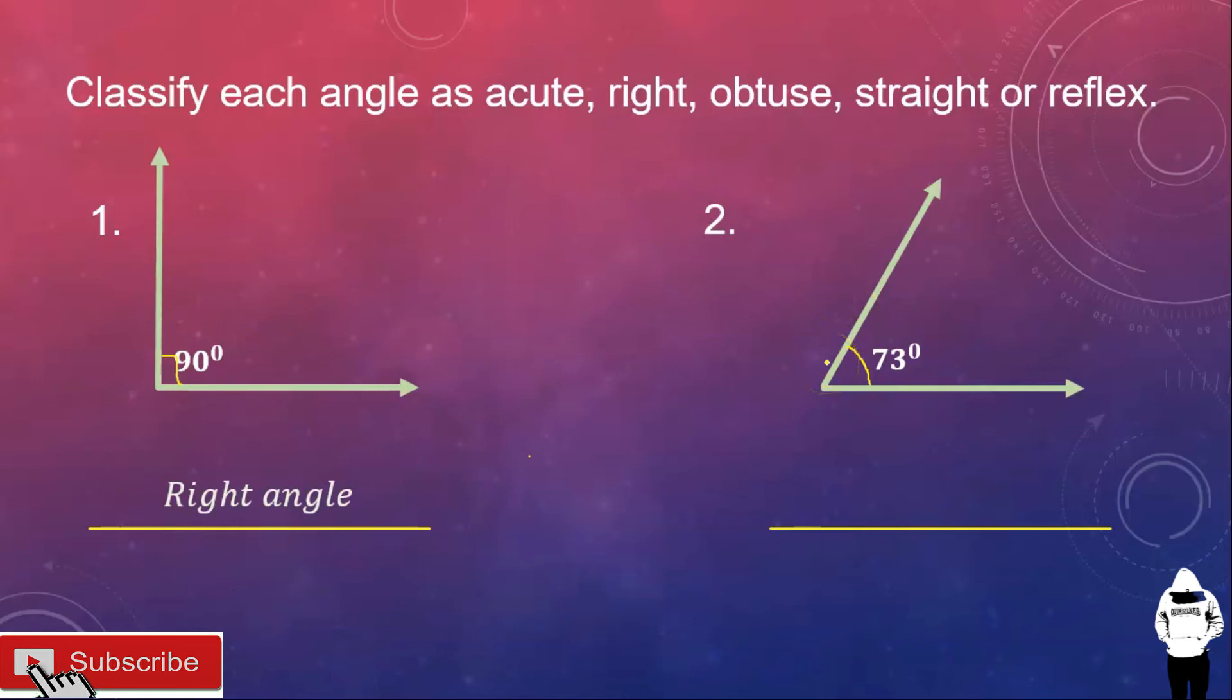Number two, this angle measures 73 degrees. So, this is between 0 to 90 degrees. So, this is acute angle.